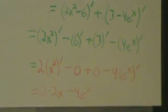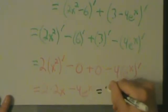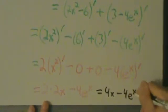Alright, and then let's get a third color. So when we simplify, this is going to be 2 times 2x minus 4e^x. So that's actually just 4x - 4e^x.